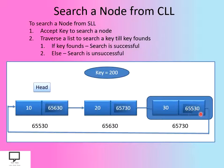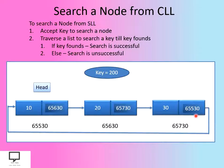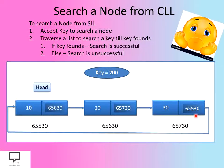Here we cannot move forward any further, because otherwise we will go round and round and never get the desired output. We have to stop at this position because the next field of this current node is nothing but the address of the head node, indicating the end of the list. So we stop here, and it indicates that my search is unsuccessful — the key value 200 is not present in the linked list.